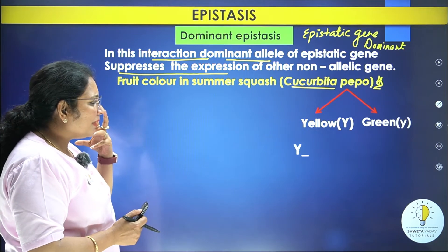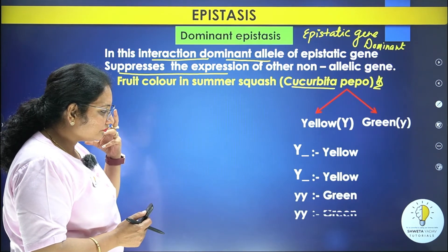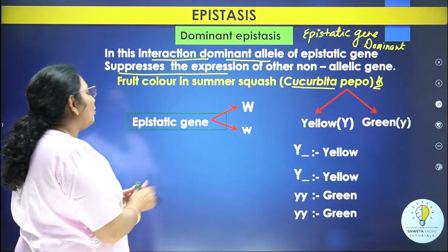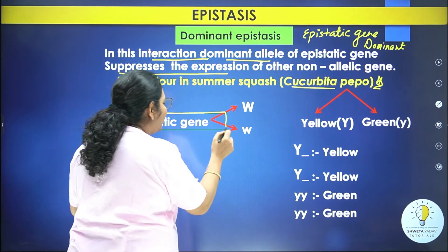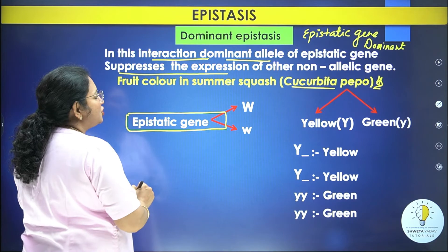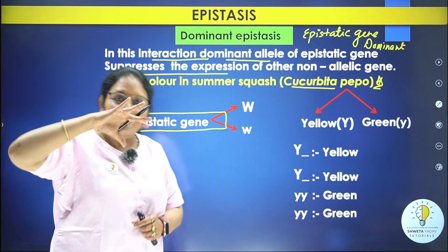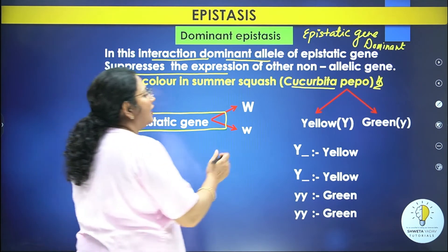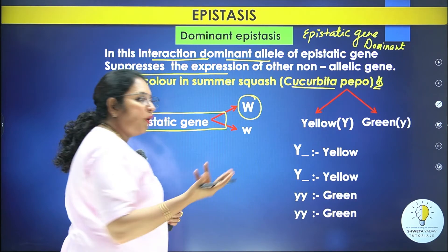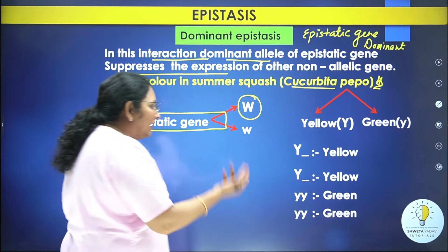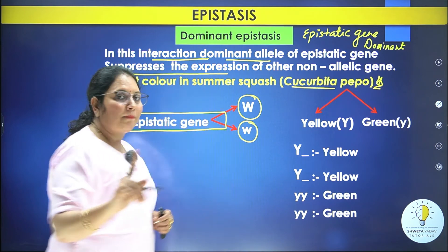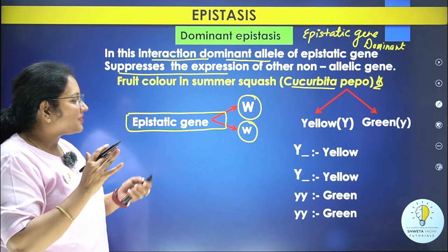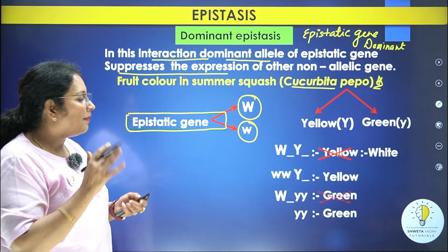Now in this Cucurbita pepo, we observe different situations — yellow, green, and white as possible outcomes. In dominant epistasis, the dominating gene W is the one that dominates. This W gene is responsible for the white color. Since it is dominant epistasis, whatever other allele comes in front of W, it will not let that other gene's expression be expressed.